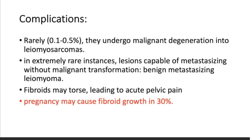What are the possible complications? Generally, benign masses or uterine fibroids do not have many complications. Rarely, in about 0.1% to 0.5% of cases, they can undergo malignant degeneration into leiomyosarcoma. In extremely rare instances, the lesion can metastasize without malignancy — this is called benign metastasizing leiomyoma. Also, fibroids may torse, leading to acute pelvic pain. Pregnancy may cause fibroid growth in 30% of cases, as the changing hormones can increase the size of the mass.